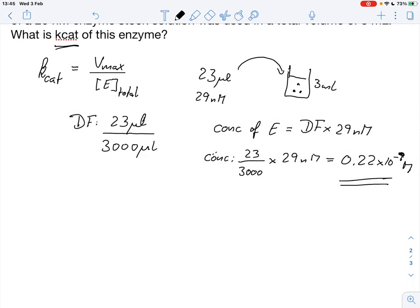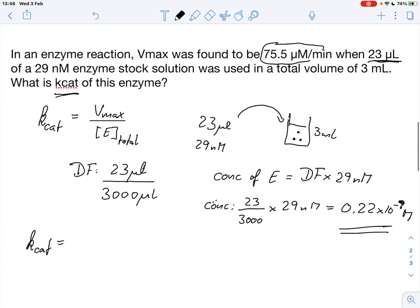And we just simply put that into kcat, into the equation. So we've got kcat equals 75.5 times 10 to the minus 6 molar, that's the micromolar per minute, and we divide that by 0.22 times 10 to the minus 9 molar. That's the enzyme concentration. So the units molar cancel out.